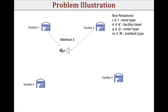Let me briefly go over some of the notation we use in this paper. Here, i denotes the item type, little k denotes the facility label, little q denotes the order type, which is characterized by the composition of items in the order and the location — because an order for glasses and a watch from California is different than the same order from New York. And finally, we use little m to denote the method type, as shown in the simple illustration.